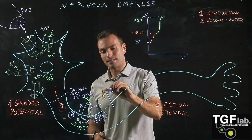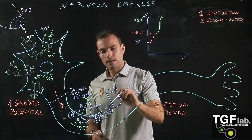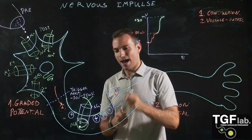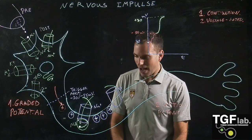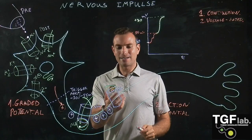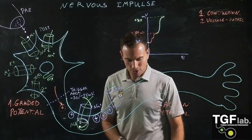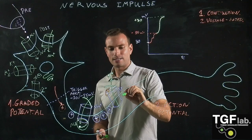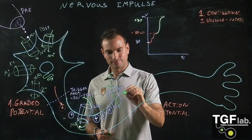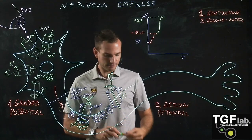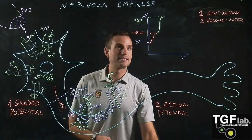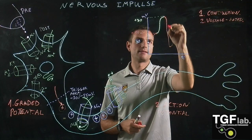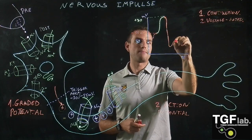After sodium enters and depolarizes the membrane, we arrive at a second voltage-gated ion channel — in this case, a potassium channel, which also has an activation gate. The depolarization activates this potassium channel, and potassium moves out of the cell along its concentration gradient, making the cell more negative. This process is called repolarization, which brings the membrane potential back to the resting membrane potential.